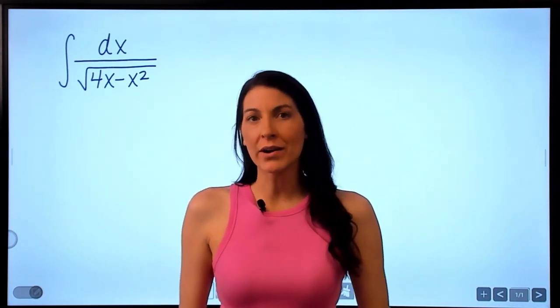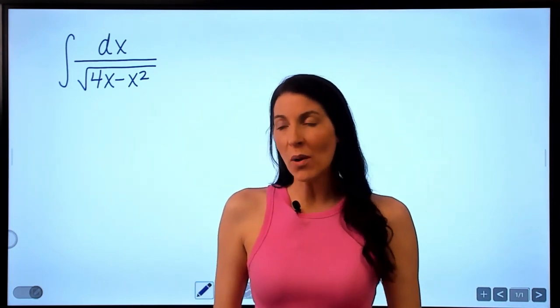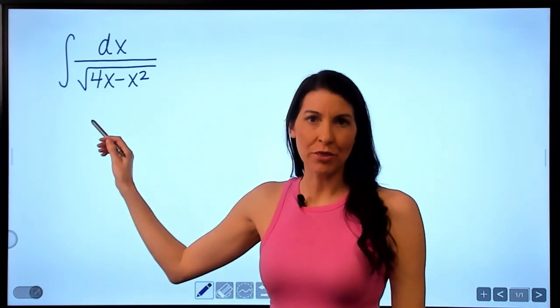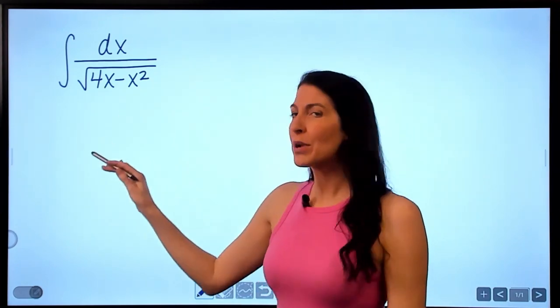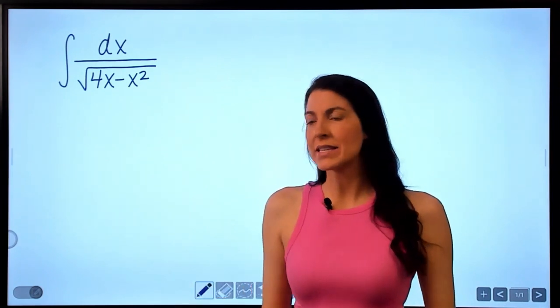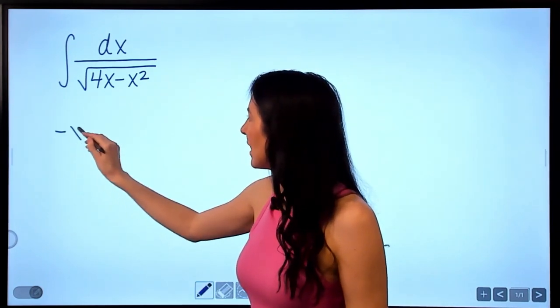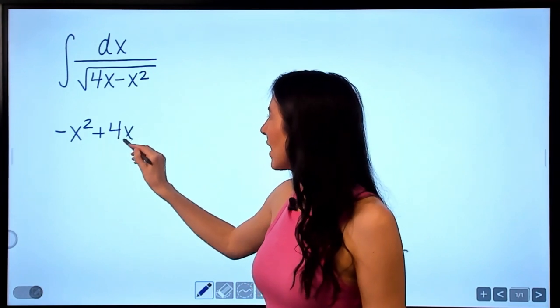Like I said, this will require us to complete the square, and it will require us to complete the square with what is underneath the radical. So I'm going to rewrite that, but I'm going to rewrite it in standard form. So I'm going to put the negative x squared first and then the plus 4x.